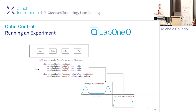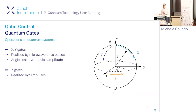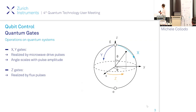We want to do this mostly to provide some understanding of what's actually happening and what's feasible and convenient to run. If we want to run an experiment — perform operations on a quantum system and manipulate quantum states — for the easy case of a single qubit state, we can represent this on the Bloch sphere. Operations we can perform include X or Y gates to excite the qubit.